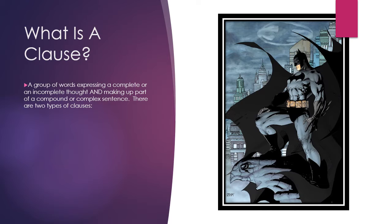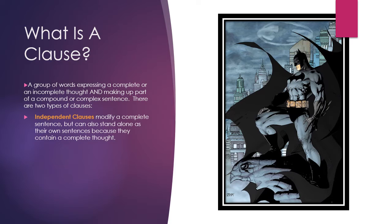There are basically two types of clauses. The first type is an independent clause — like Batman is independent in this picture over here. He's standing up there, looking out over Gotham, and he is the sole independent vigilante doling out justice to the city. An independent clause works in much the same way: it contains a complete thought and can stand alone as its own sentence. Just as Batman is a fully self-realized person able to stand alone as his own hero.